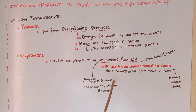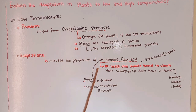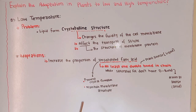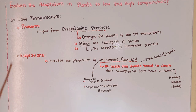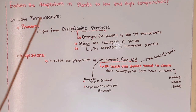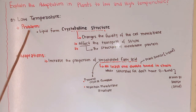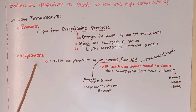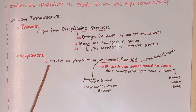By increasing the proportion of unsaturated fatty acids, plants prevent crystal formation and maintain membrane structure. That is how plants adapt themselves at low temperature and overcome the problem of crystallization.